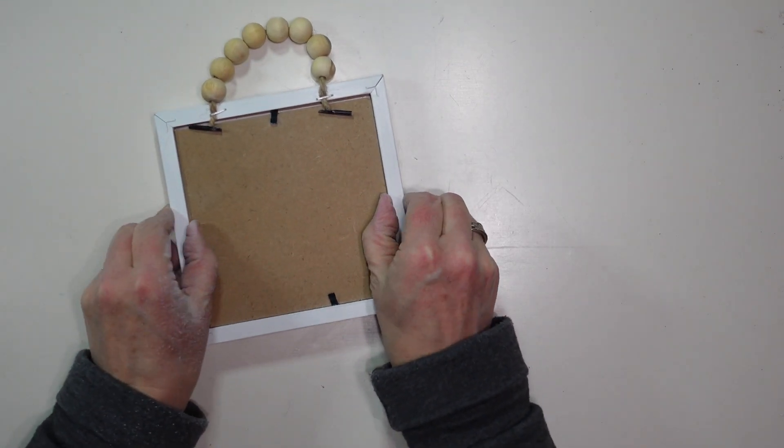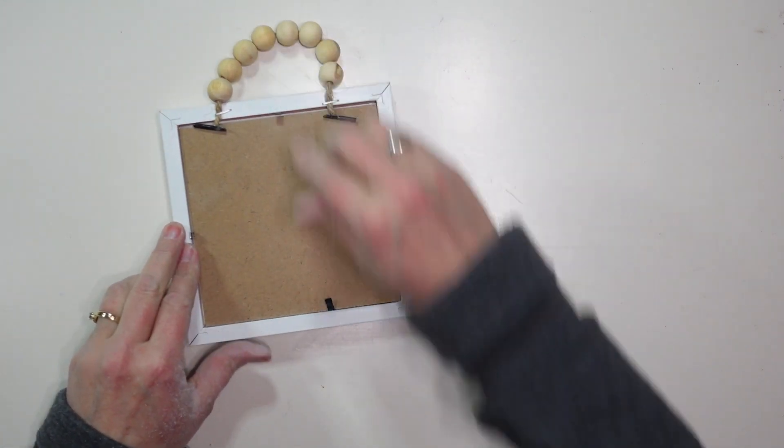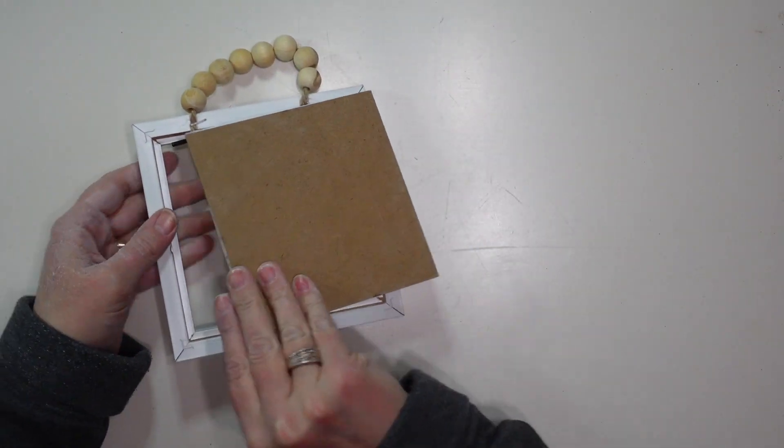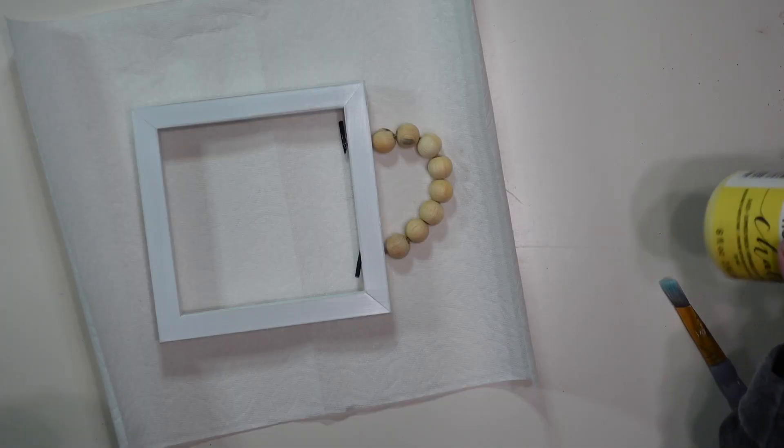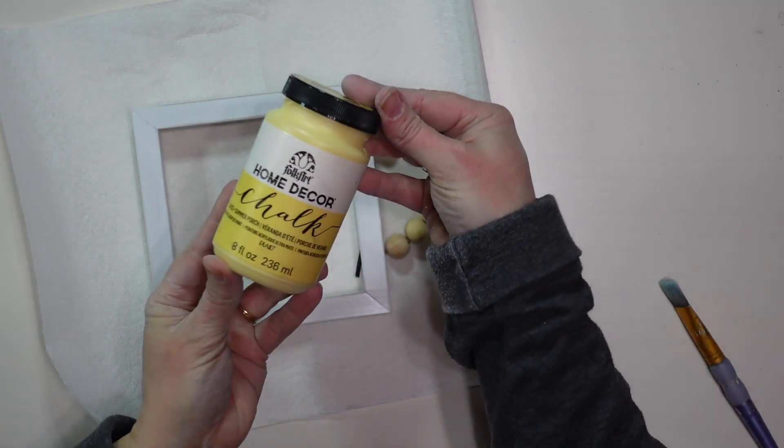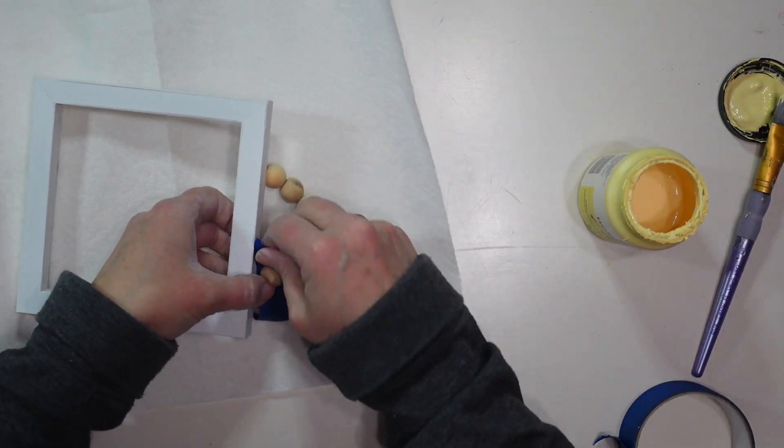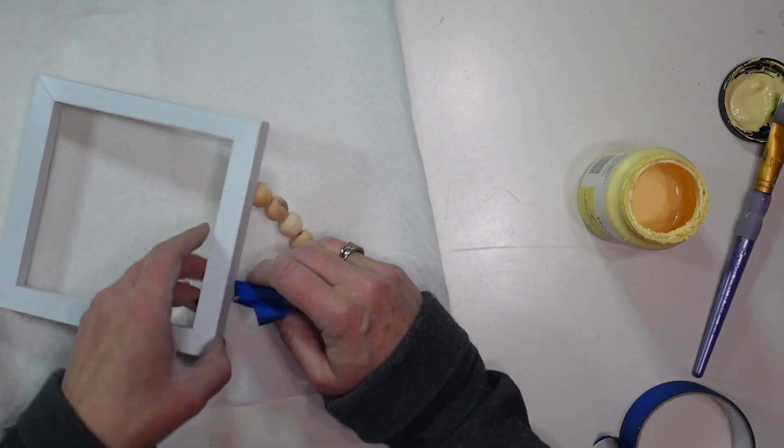I am going to go ahead and remove the back from the frame and I am going to be painting my frames using this yellow chalk paint. And before I do, I am going to add a little bit of painter's tape around those beads that are right next to the frame because I do want to keep the beads a natural wood color.